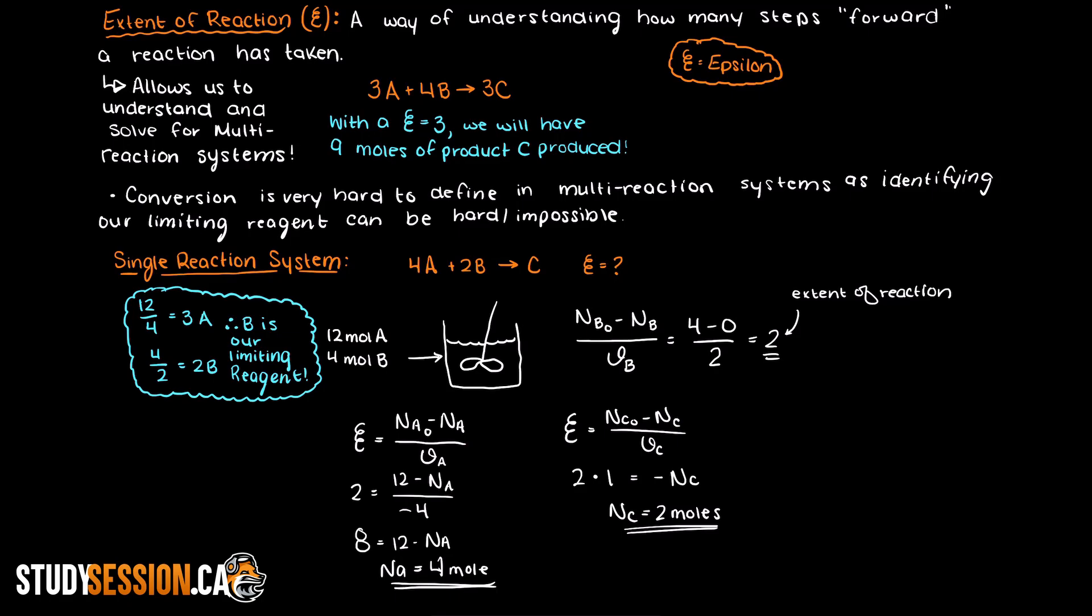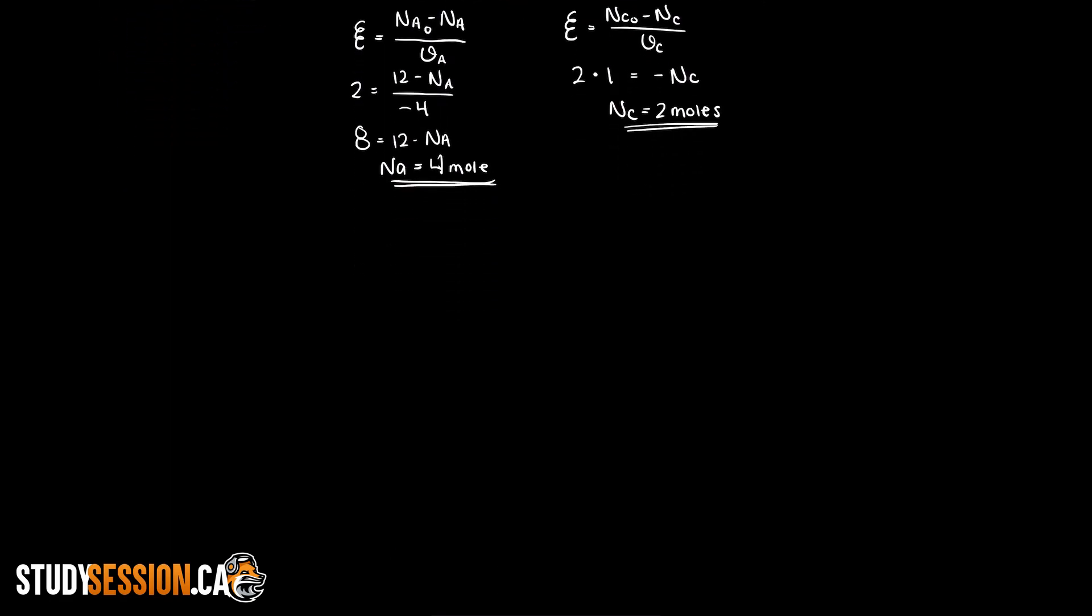Now that we are finished with our single reaction system example, let's move on to get a better understanding of how the extent of reaction can help us understand multiple reaction systems. As I stated previously, conversion is not usually an option for multiple reaction systems. Therefore we need another way of understanding how much all of our reactions will react. So to better understand this let's create another arbitrary example but with two different reactions. Although this is a low number of reactions this method works with any number of reactions.